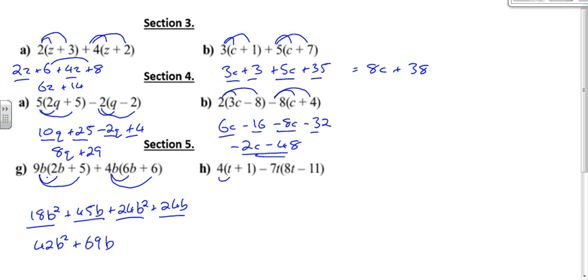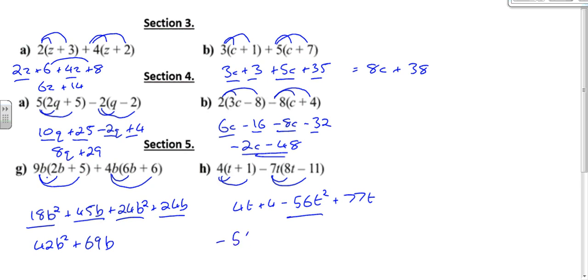Next: 4 times t is going to be 4t. 4 times 1 is going to be plus 4. Minus 7t times 8t is going to be minus 56t squared. Minus 7t times minus 11 is going to be plus 77t. Then we simplify: there's only one lot of t squareds, so it's minus 56t squared. 4t plus 77t is going to be plus 81t. Then you've got plus 4 on the end.